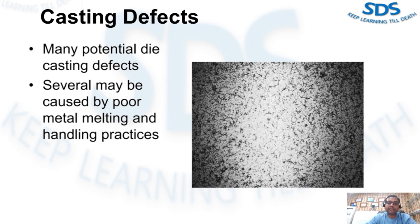Casting defects can have many causes and this video is all about casting defects resulting from poor molten metal quality. If molten metal quality is not maintained, casting defects can occur. We will discuss which types of defects can occur due to poor molten metal quality.